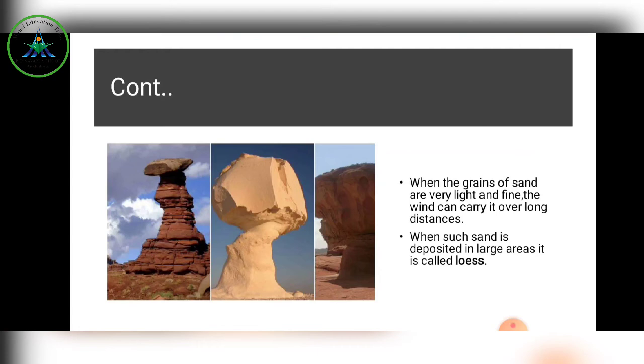When grains of sand are very light and fine, the wind can carry them over long distances. When such fine, lightweight sand is deposited over large areas, it is called loess. Sand dunes and loess are both features of wind deposition.